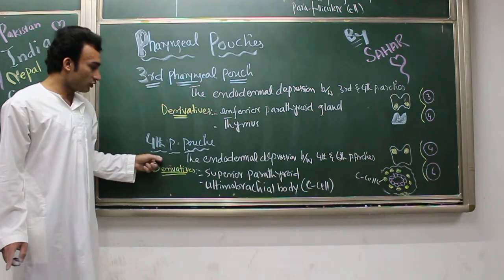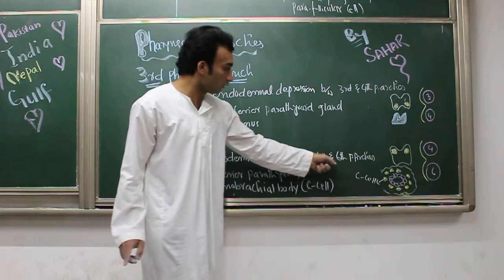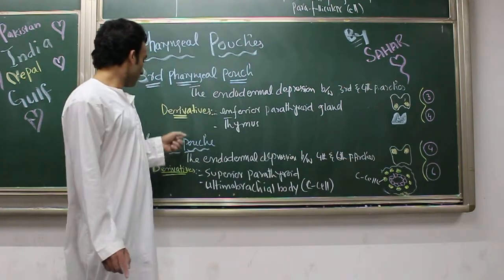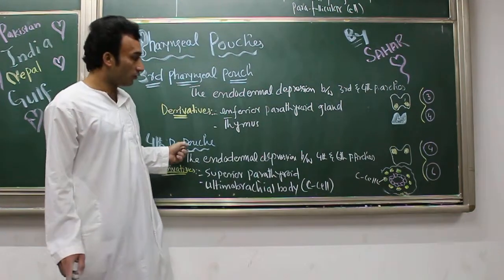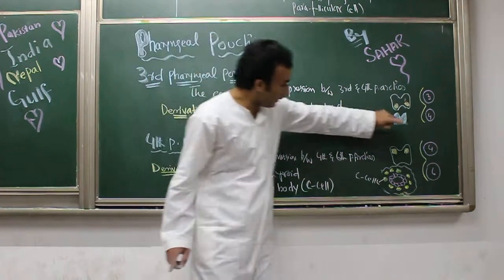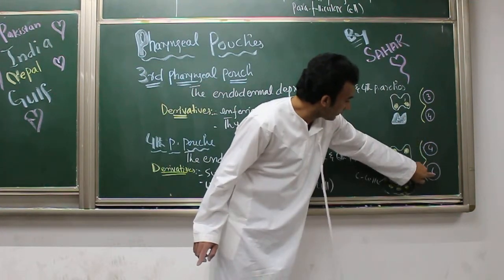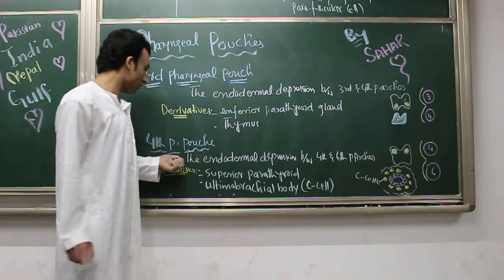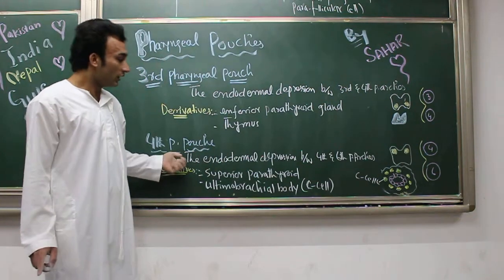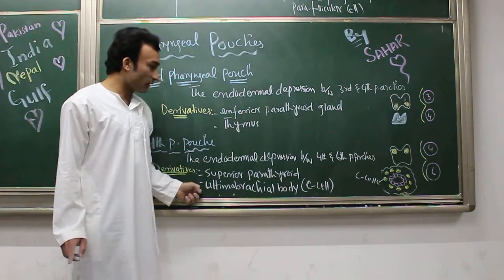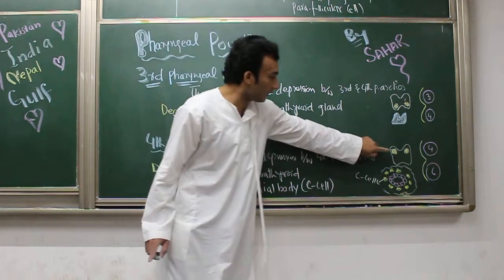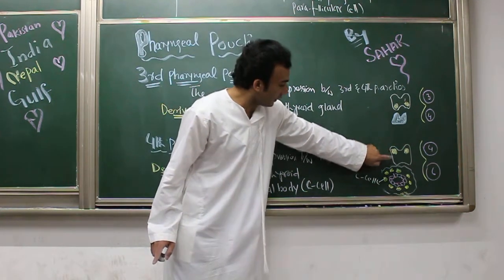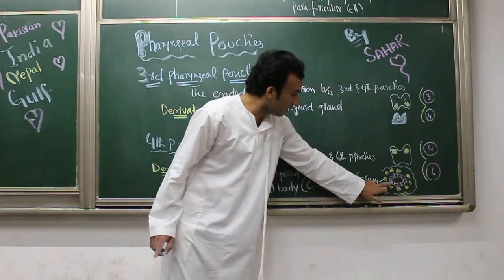The fourth pharyngeal pouch: the endodermal depression between the fourth and sixth pharyngeal arches is called the fourth pharyngeal pouch. You can see in the diagram — this is the fourth pharyngeal arch, this is the sixth pharyngeal arch, and this depression is the fourth pharyngeal pouch. The derivative of the fourth pharyngeal pouch is the superior parathyroid gland.